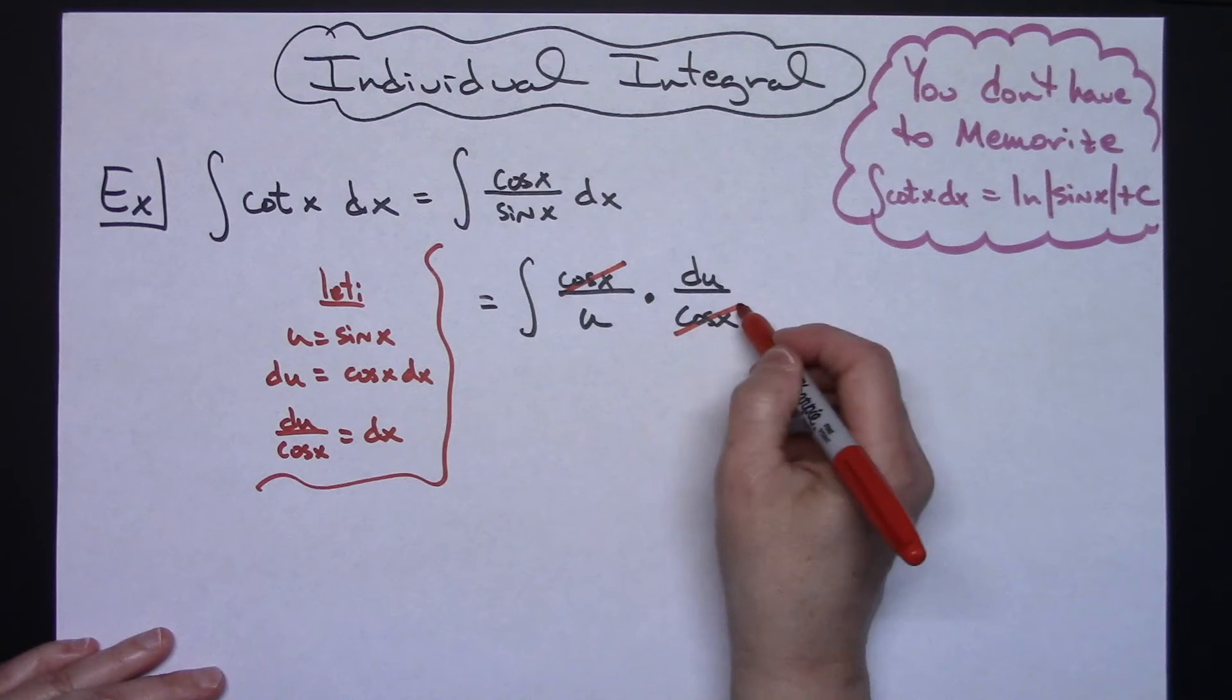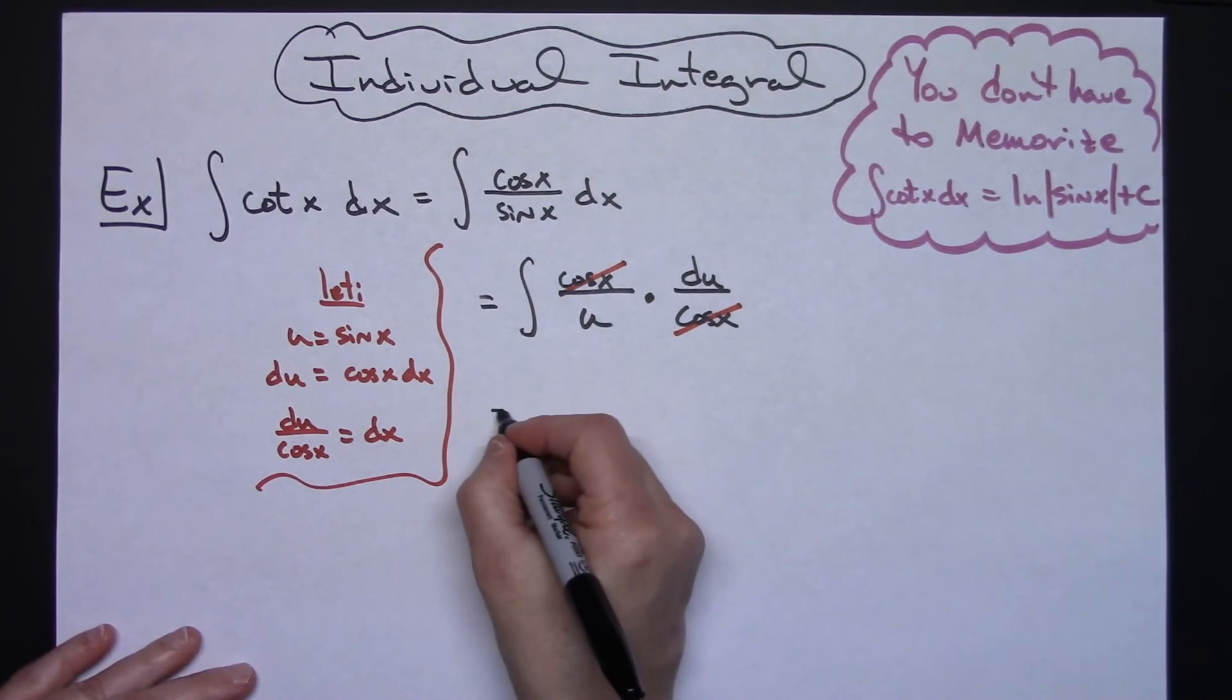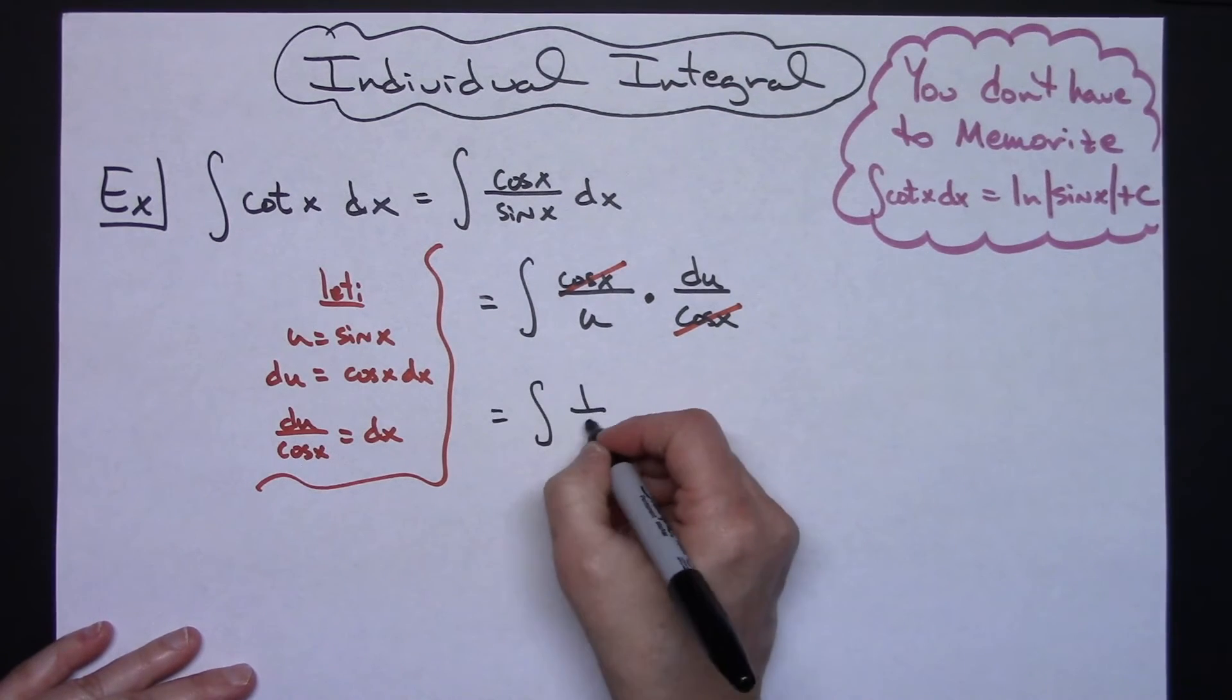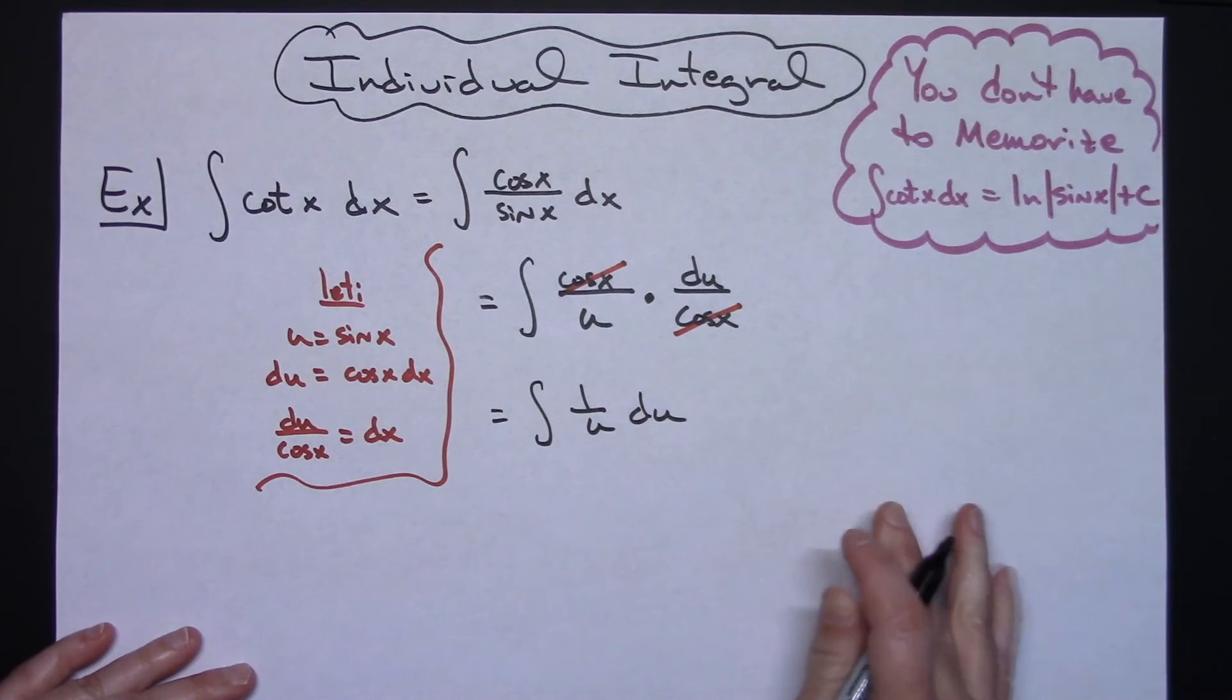That's going to allow us to cross out those cosine x's and that'll leave us with the integral of 1 over u du.